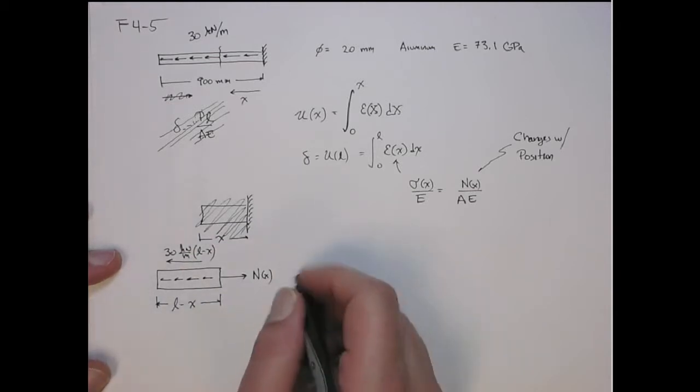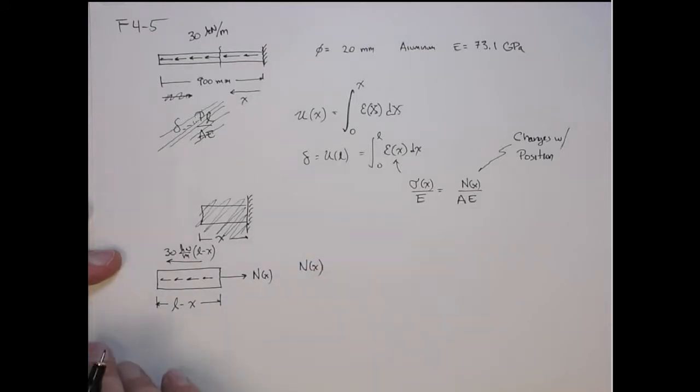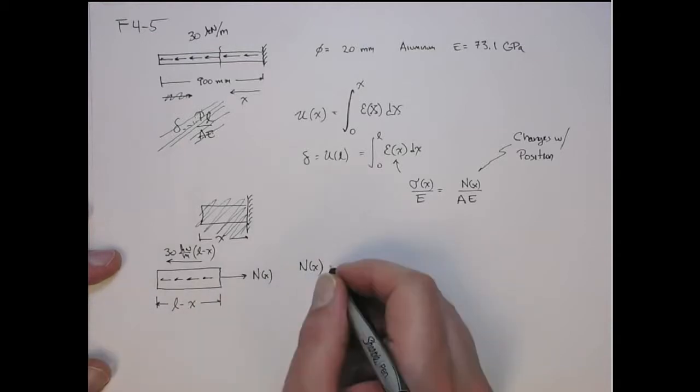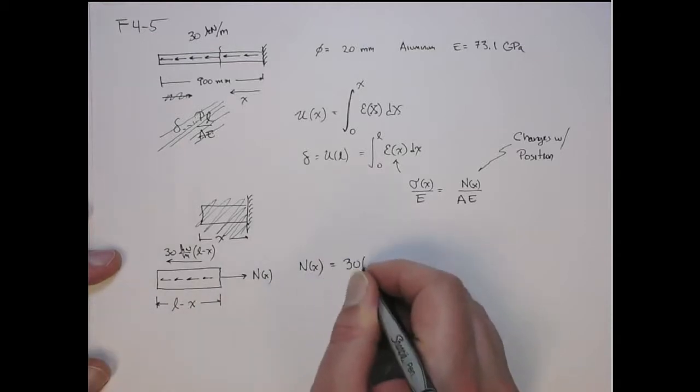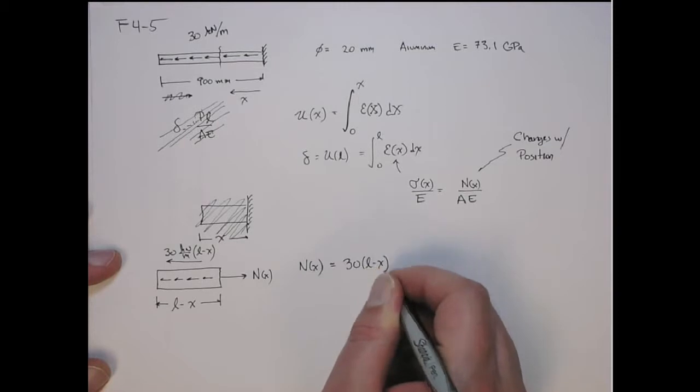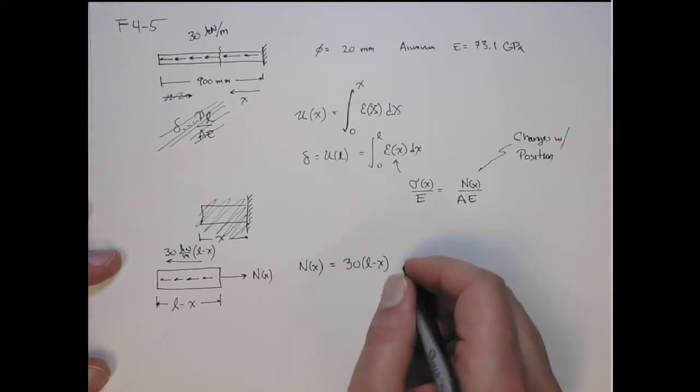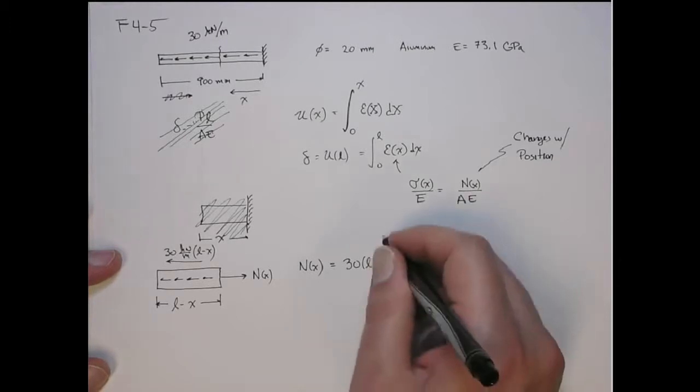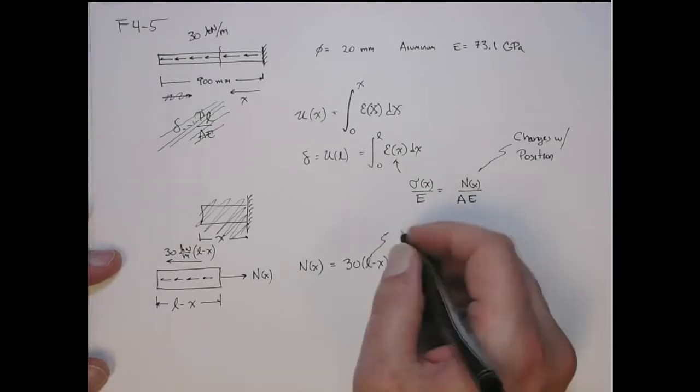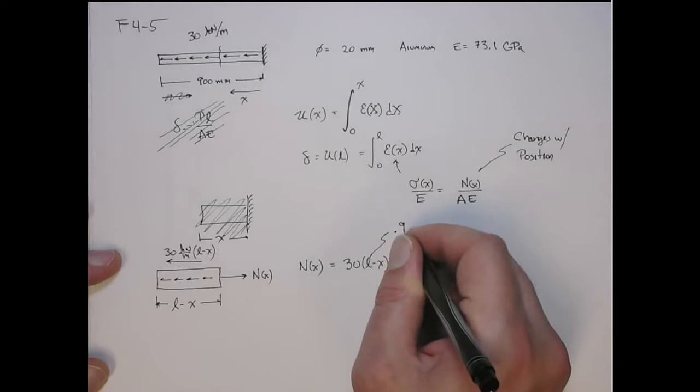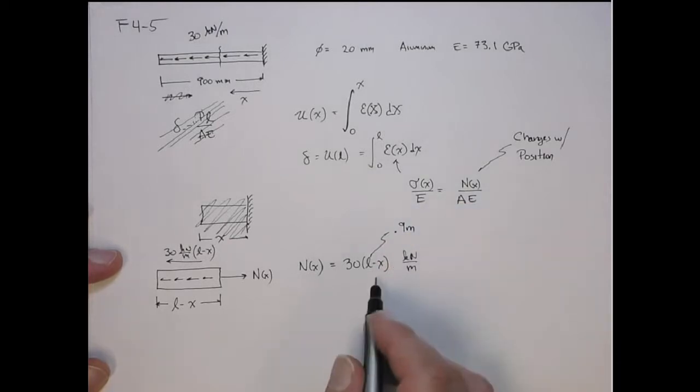So that's the total force. If I do sum of forces in the x, I get N(x) equals 30 times L minus x kilonewtons per meter. And I know L - L is 0.9 meters. So we have x, and when we solve for this, for x, it will turn out to be meters.